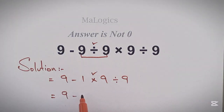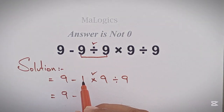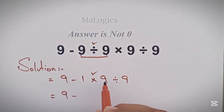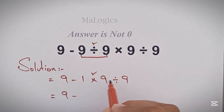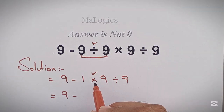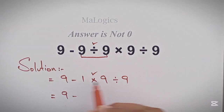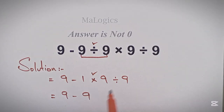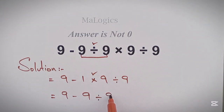9 minus... Because of PEMDAS, where multiplication and division have equal priorities and we have to work from left to right, so we do multiplication first and then division. Now 1 times 9 equals 9, and this divided by 9.